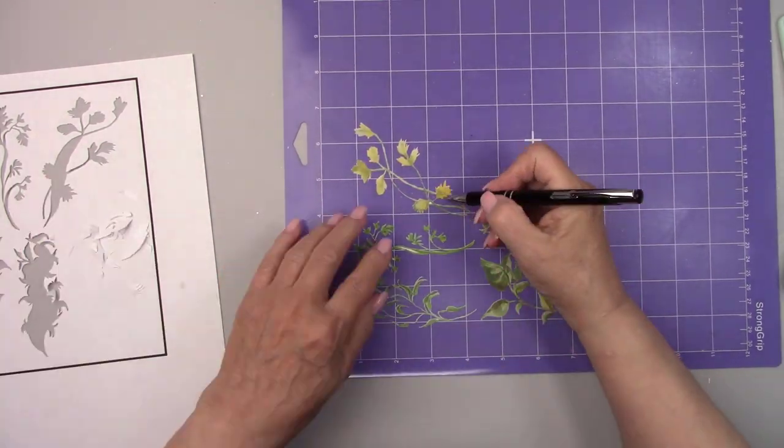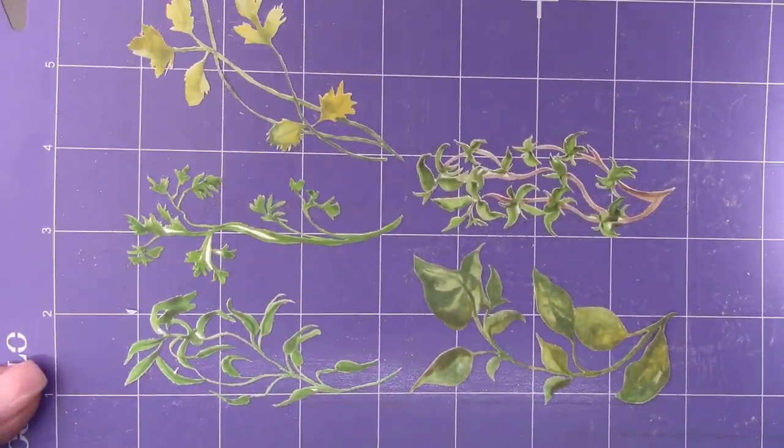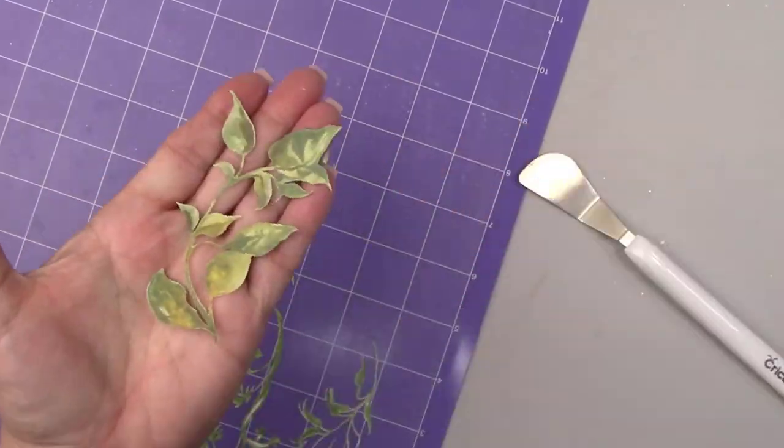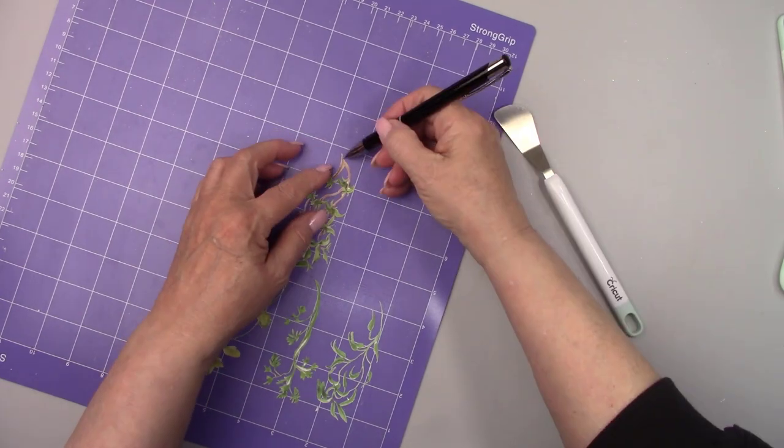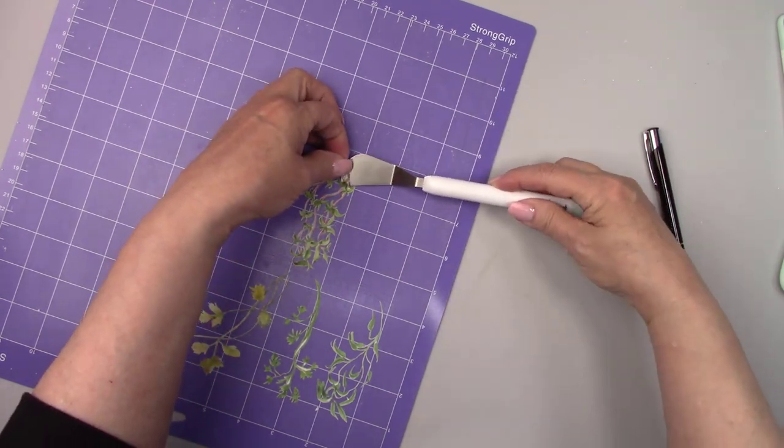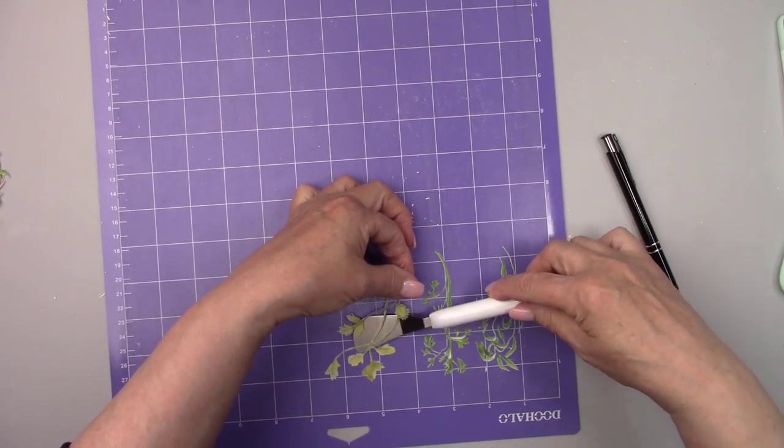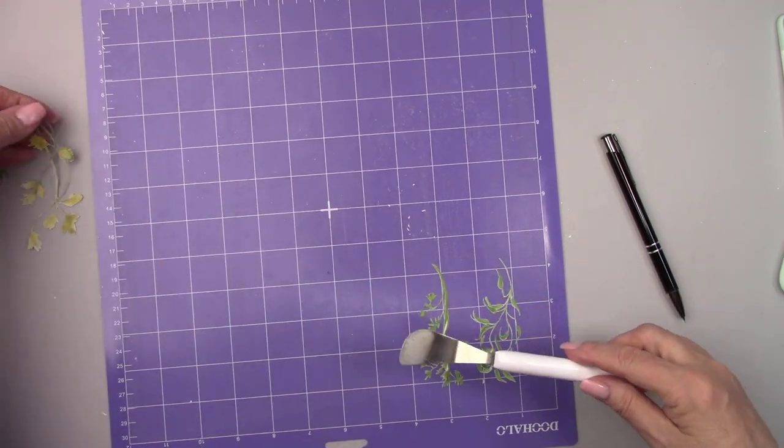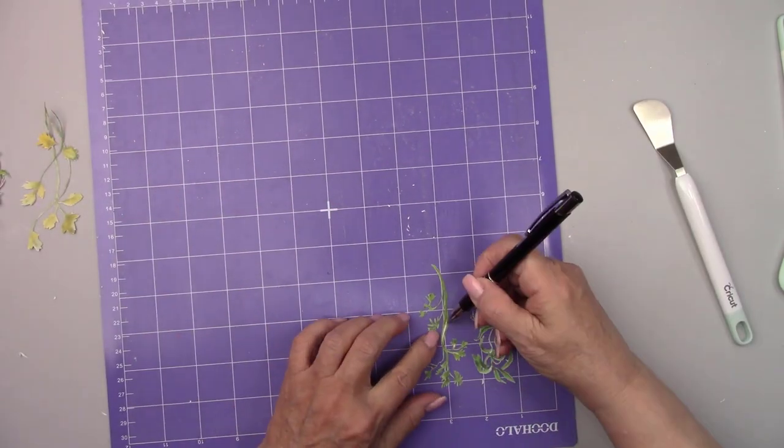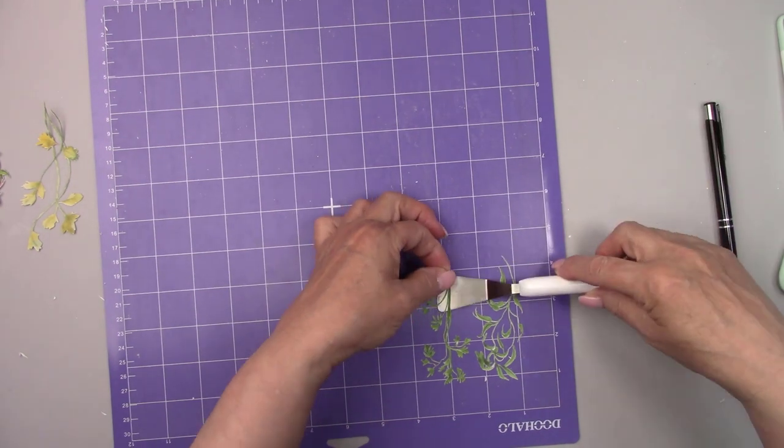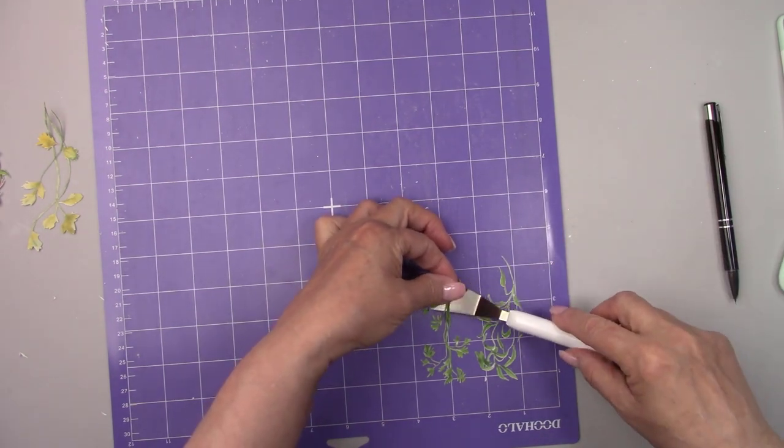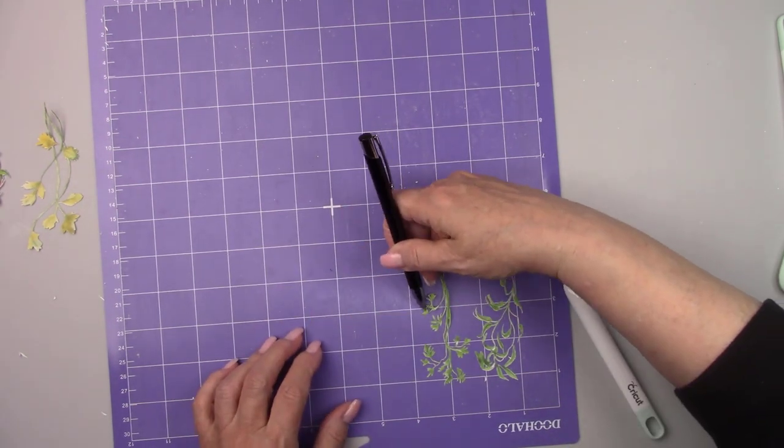Now I realize everyone doesn't have a Cricut machine. If you don't, I have a solution for you. I'll be putting together a package that will be available in my Etsy shop. It'll contain the printed material and cut pictures of all the herbs. I'll spray them with sealer and remove them from the paper. They'll be ready for decoupage the minute you receive them.